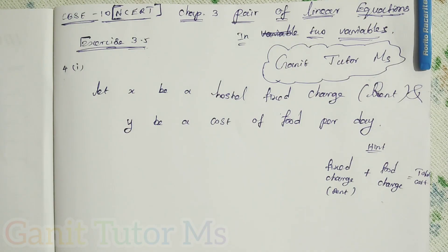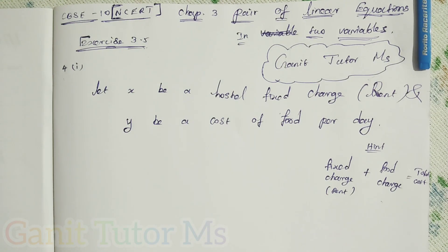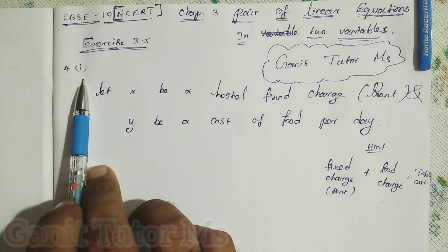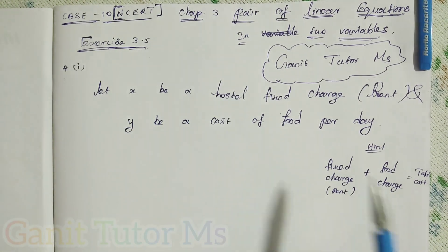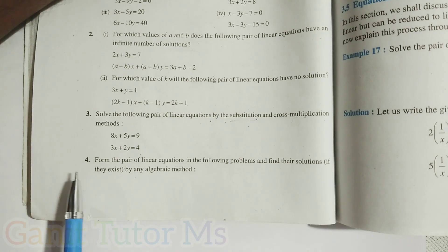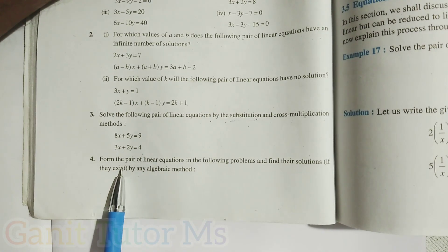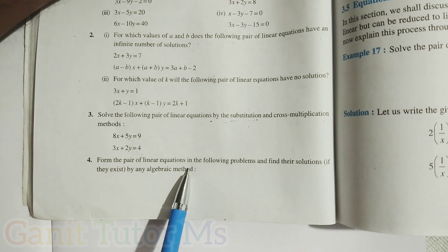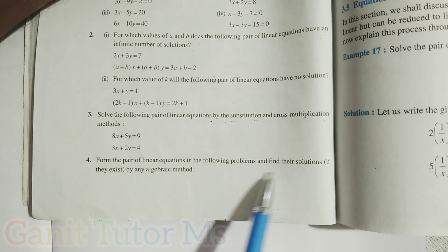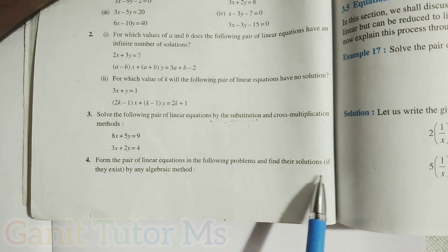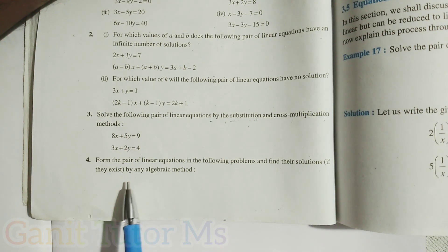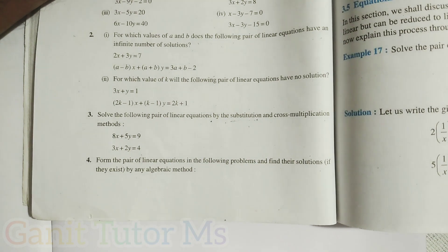In this video, I am going to solve the problem — Exercise 3.5, fourth problem, subdivision number 1, chapter 3, tenth standard. The problem says: Form the pair of linear equations in the following problem and find the solution within the bracket set if they exist by any algebraic method.